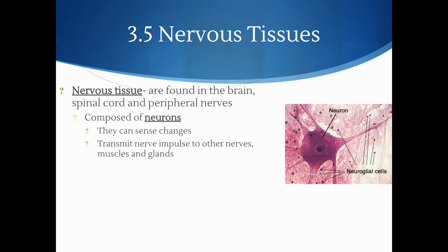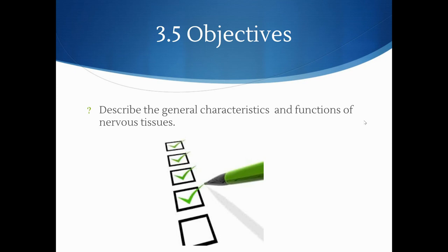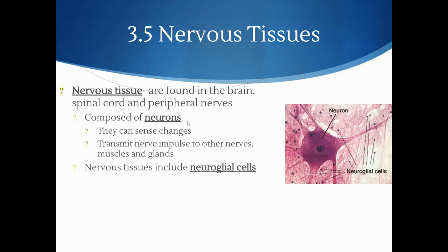That is everything for this chapter. Before you close this out, make sure you answer the question describing the general characteristics and functions of nervous cells. Once you finish answering all the objectives, also write down three questions you have about this presentation — anything related to tissues — to discuss in class. Thank you for watching; hopefully the hour wasn't too bad.